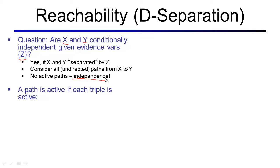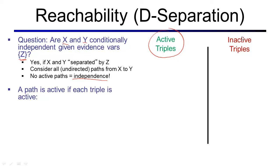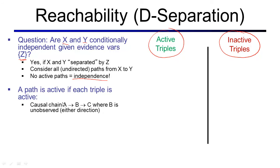Let's start categorizing triples. There are active triples and inactive triples. The first triple we'll consider is the causal chain, where a random variable a is pointing to random variable b to random variable c in the Bayes net. If b is unobserved, we have an active triple. If the middle node is observed in the causal chain, we have an inactive triple.